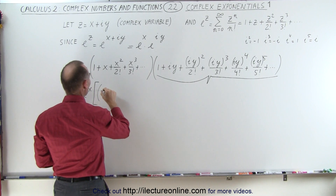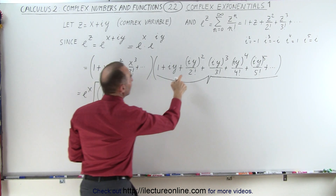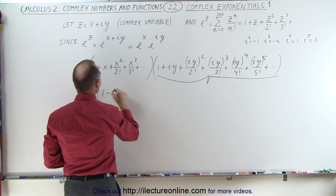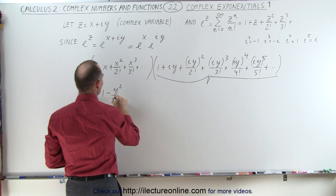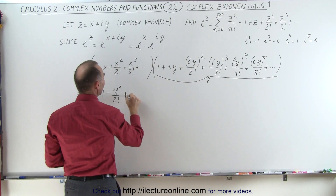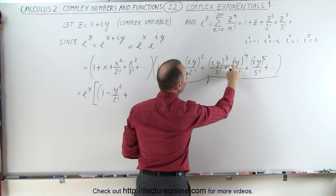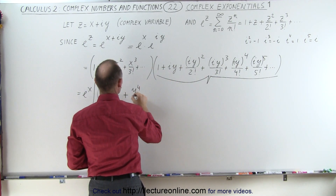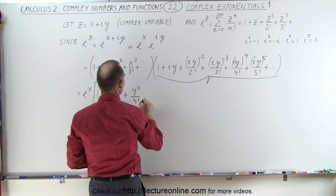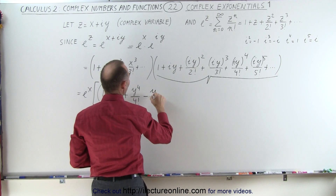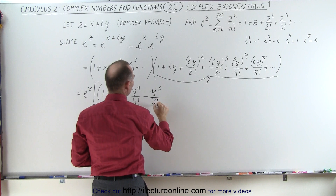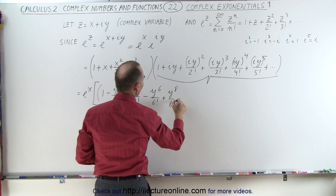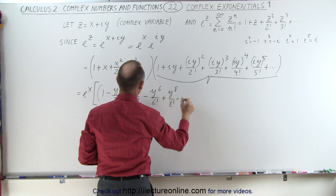The real part gives us: 1, then i squared is negative 1 so we get minus y squared over 2 factorial, then i to the 4th is 1 so we get plus y to the 4th over 4 factorial, minus y to the 6th over 6 factorial, plus y to the 8th over 8 factorial, and so forth.